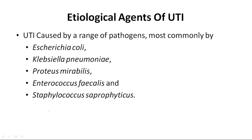Let's see the etiological agents of urinary tract infection. Out of the exhaustive list of pathogens that cause urinary tract infection, the common ones include E. coli, Klebsiella pneumoniae, Proteus mirabilis, Enterococcus faecalis, and Staphylococcus saprophyticus.